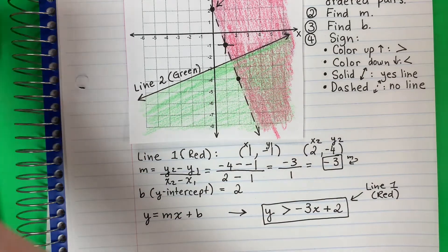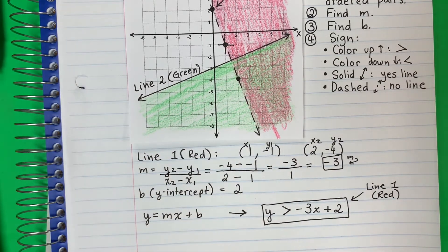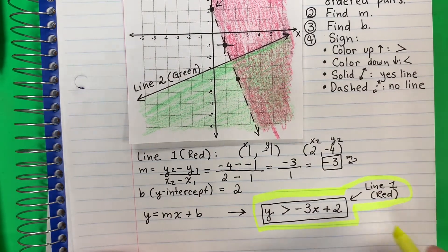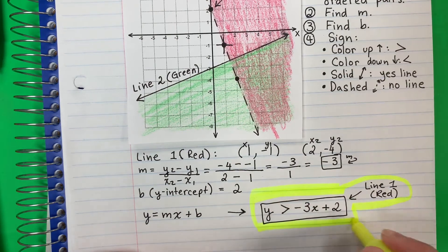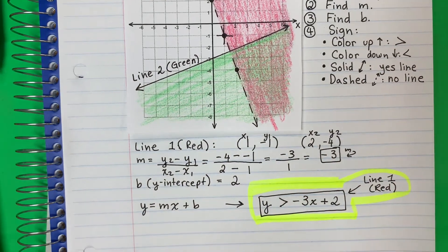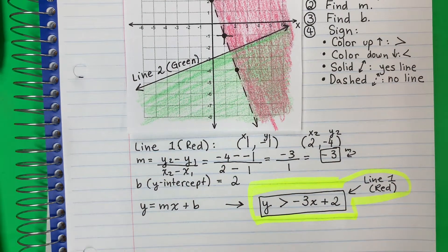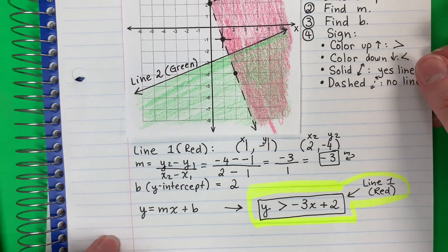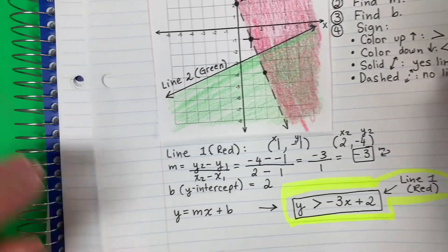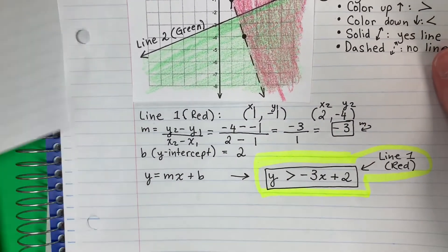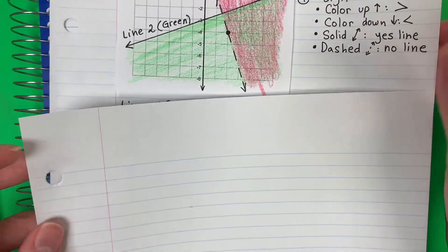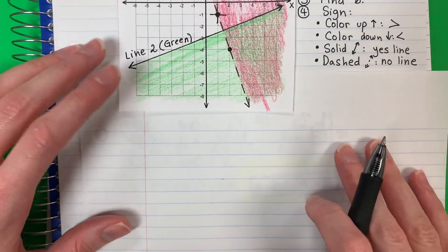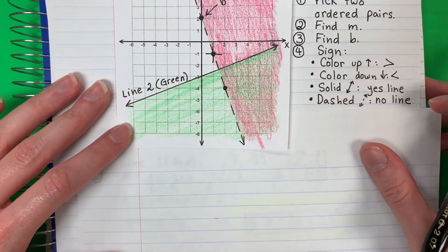So this right here is my line 1, the red. And I'm going to color it so I remember. This is one of my answers. I still have line 2. So I'm going to do it on a different paper for line 2. So line 2.